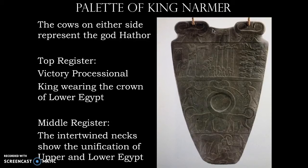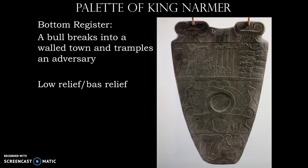The cow on either side is representative of the god Hathor. In the middle register, we have the intertwined necks, which show the unification of both Upper and Lower Egypt — this is also where eye makeup would be mixed. In the bottom register, we have a bull breaking into a walled town and trampling an adversary. This work is considered low relief, or bas relief. Both sides have figures raised off the surface of the palette but not truly three-dimensional. In Greek and Roman civilizations, we'll see more three-dimensional carved figures emerging from the background, which is noted as high relief.